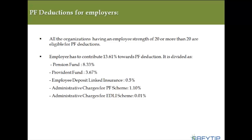Now, PF deductions for employers: all organizations having an employee strength of 20 or more are eligible for PF deductions. If your company has 20 or more employees, you need to register under EPFO. The employer has to contribute an equal amount of 12%. Apart from that, he has to pay 1.61% towards admin charges, making the employer's total contribution 13.61%. Of the employer's 12%, 8.33% goes into the pension fund and 3.67% goes to the provident fund.